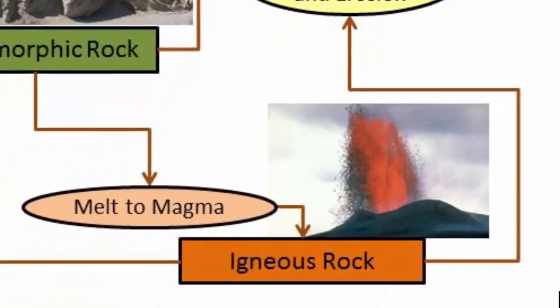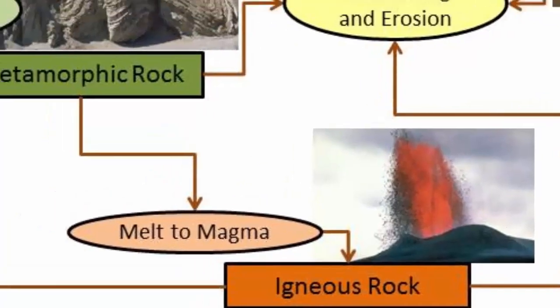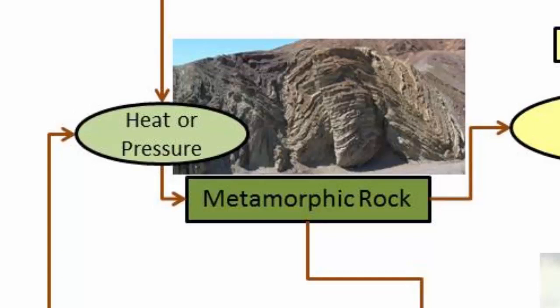Igneous rocks are those that formed after molten magmas or lavas cool and solidify. Metamorphic rocks are those that have changed chemically or physically due to increased temperatures and/or pressures.